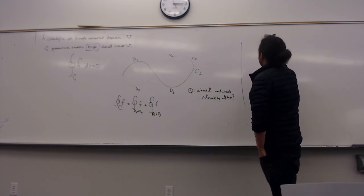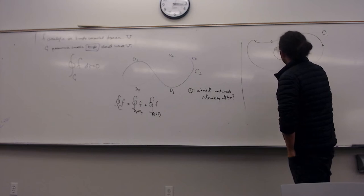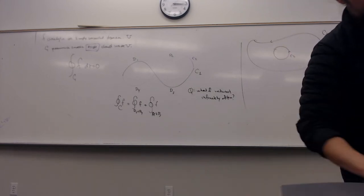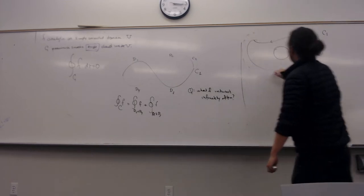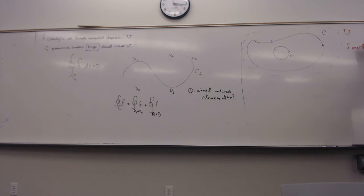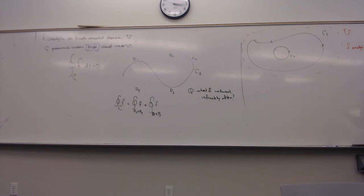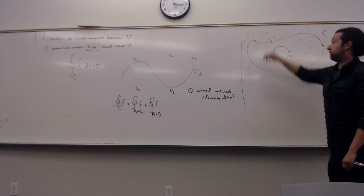The circle contour theorem says the following: if you have a contour C1 oriented positively, and a contour C2 oriented positively, and both curves are inside a domain U on which some function F is analytic, then the integral of F on C1 equals the integral of F around C2. U does not have to be simply connected in this theorem — it just has to contain the two contours. This theorem holds for non-simply connected domains.